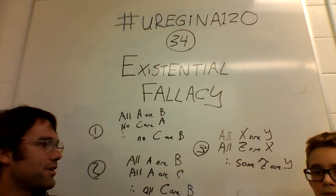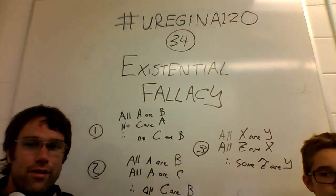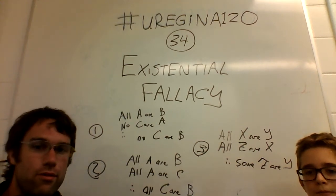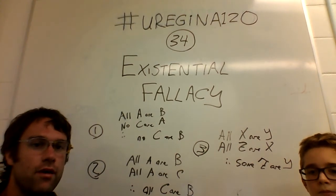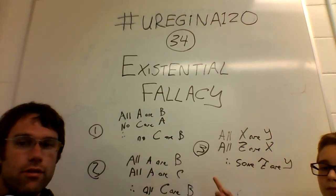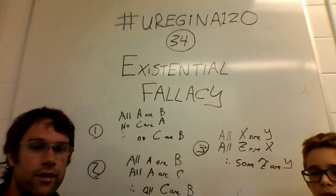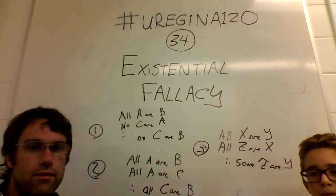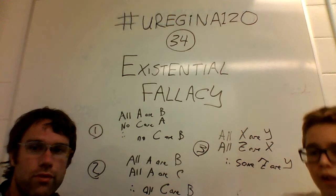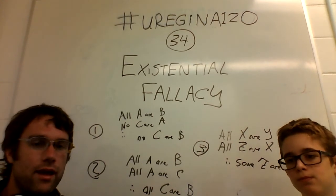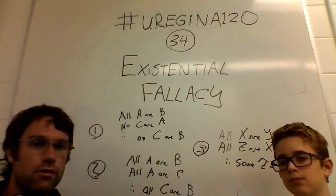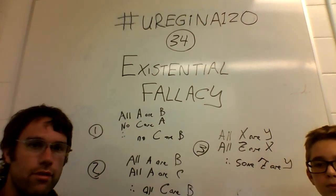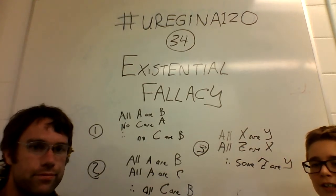This is probably the easiest to grasp — why this is actually a logical fallacy. In this case, you have to ask yourself: what happens if one of these two classes — Z, X, or Y — doesn't actually have any members? If it's an empty class, or something that doesn't actually exist, you're making a statement about things that don't exist, and suddenly the conclusion is false while the premises are true, so the argument itself becomes invalid.